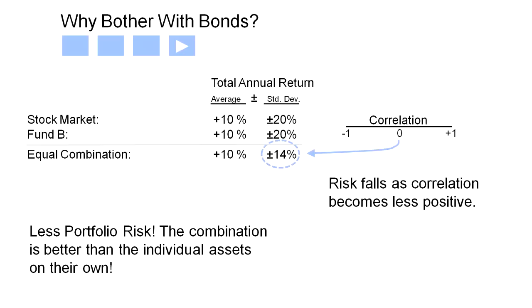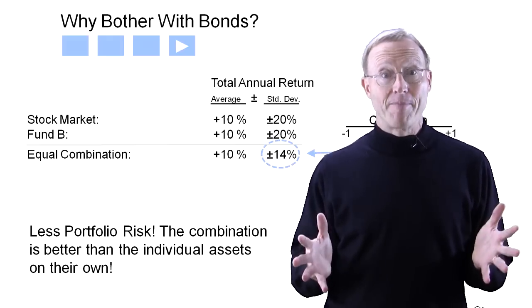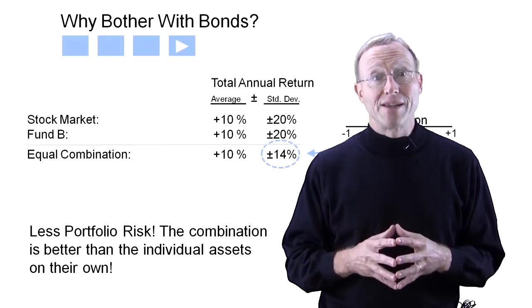The standard deviation becomes less than the weighted average. The combination is better than the individual funds on their own. Wow, where do you find an uncorrelated fund like that? The short answer is bonds.